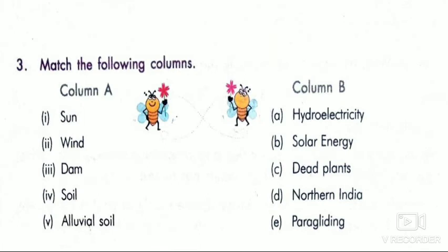Page 62: match the following columns. Sun will go along with solar energy — match sun and solar energy. Continue until number 5, alluvial soil. Wind is matched with paragliding, which uses wind energy.